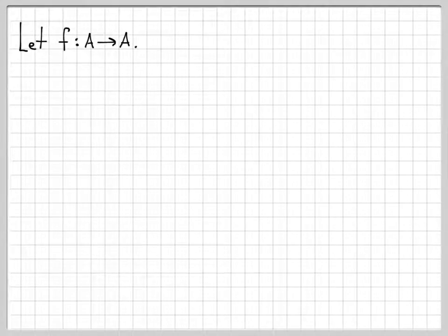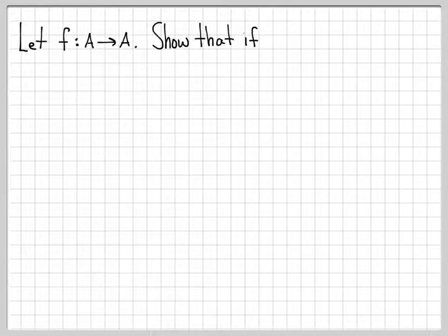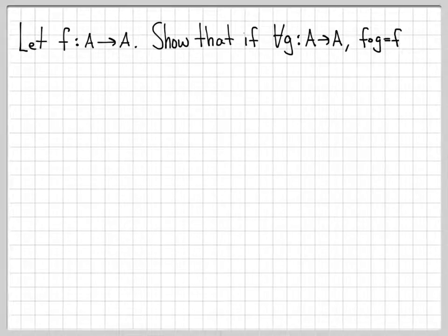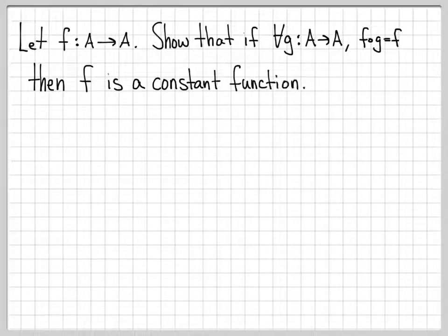In this problem, we explore a special type of function called a constant function. We're going to work with the function f, which is a function from A to A. We're going to show that if, for all functions g from A to A, f composed of g equals f, this implies that f is a constant function.